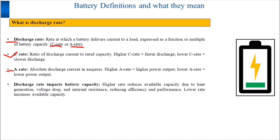How does discharge rate affect battery capacity? A higher discharge rate reduces the available capacity, while a lower discharge rate increases the available capacity. This is due to factors such as heat generation, voltage drop, and internal resistance, which reduce efficiency and performance at higher discharge rates.